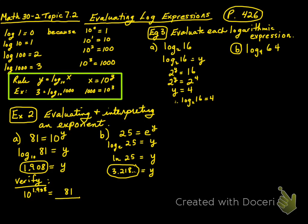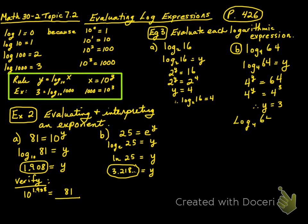For part B, we have log base 4 of 64. We set that equal to y, so 4 to the power of y has to equal 64. We can say 4 to the power of y is equal to 4 to the power of 3, therefore y must equal 3. That means the log base 4 of 64 is equal to 3.